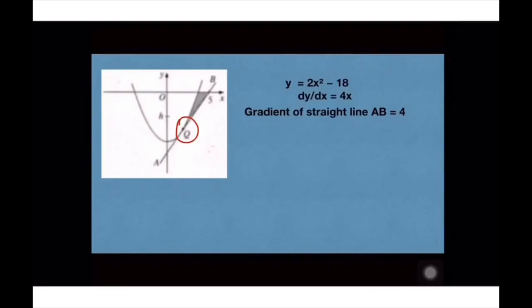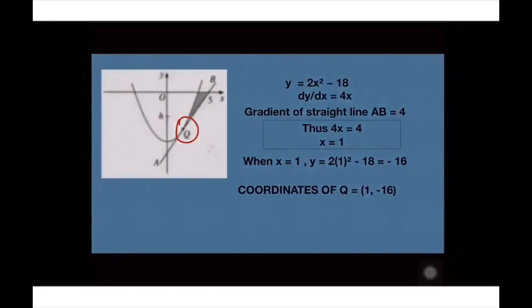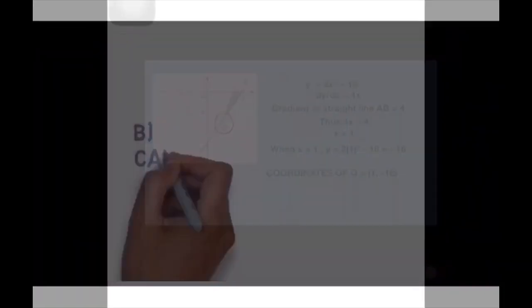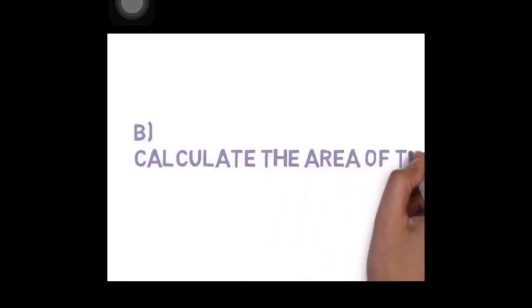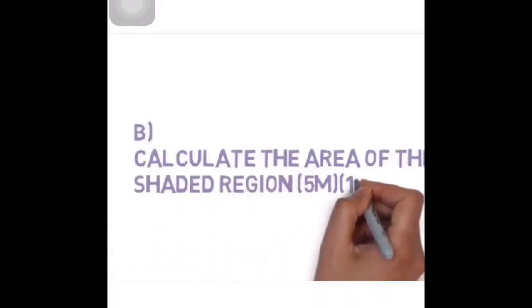Kita boleh cari macam mana nak cari tangent of the curve. Gradient of the tangent maksudnya kita boleh differentiate Y tu dapatkan dY/dX. Dapatlah gradient. Kita tahu 4X bersamaan dengan 4. Kita pindah-pindah, dapat X bersamaan dengan 1. Nak dapatkan Y pula macam mana? Masukkan je nilai 1 tu ke dalam equation curve, dapat point Y negative 16. Point Q 1, negative 16.